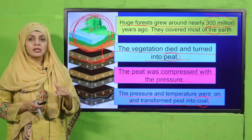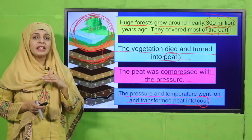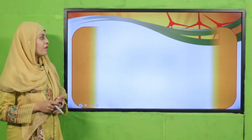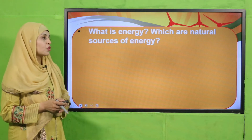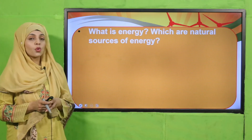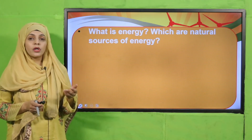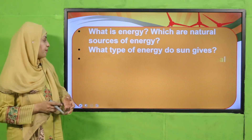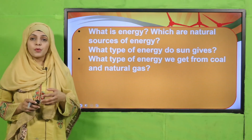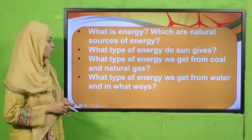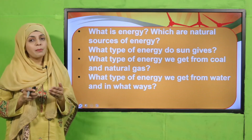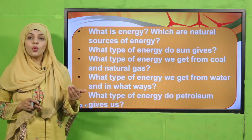Dead vegetation and plants covered with mud, rocks, pressure, and heat turned into oil, natural gas, and coal. Now for evaluation: What is energy? Energy is the ability to do work. What are natural sources of energy? Sun, wind, water, coal, natural gas, and oil. The sun gives us light and heat. Coal and natural gas provide heat and help generate electricity. Water gives us electrical energy generated through dams and barrages. Petroleum helps move our vehicles and generates electricity.